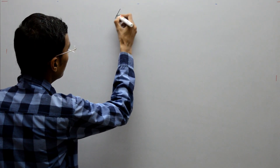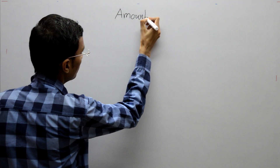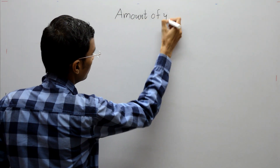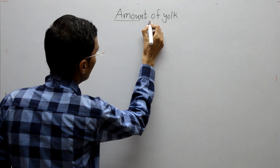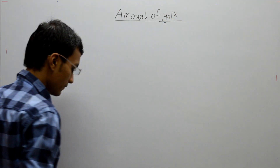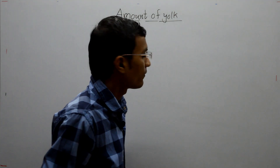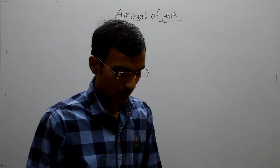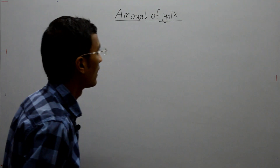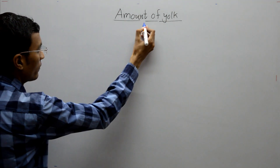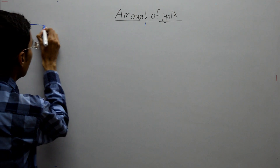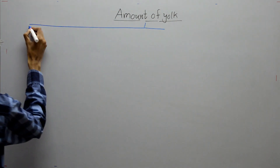First is the classification of eggs based on the amount of yolk the egg contains. Based on the amount of yolk, the eggs are classified into four different types. The first type is alecithal egg.